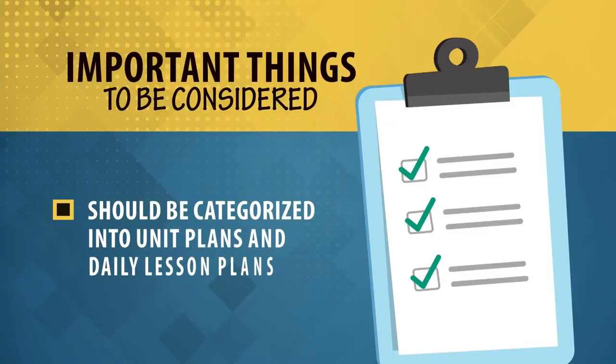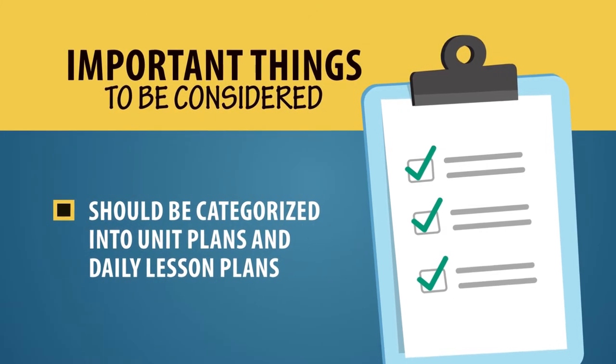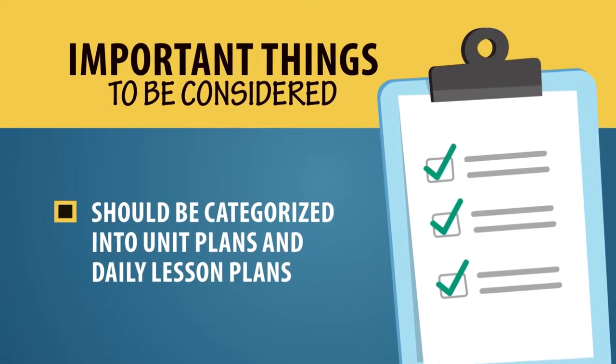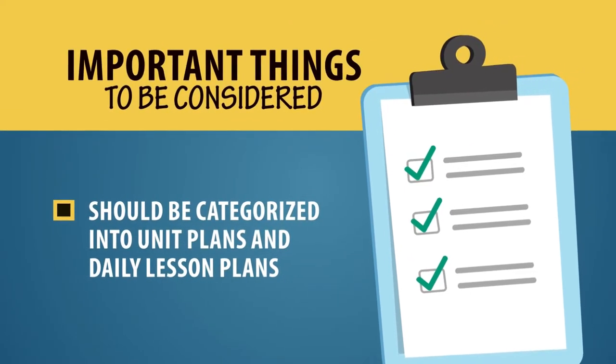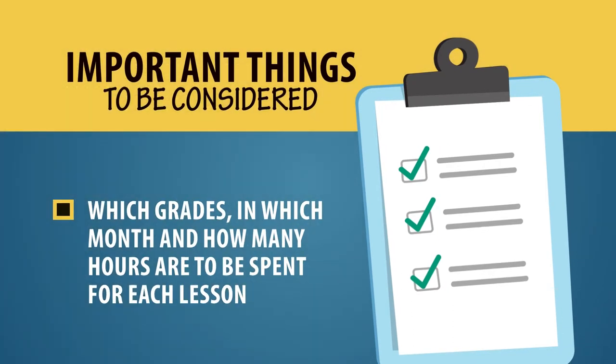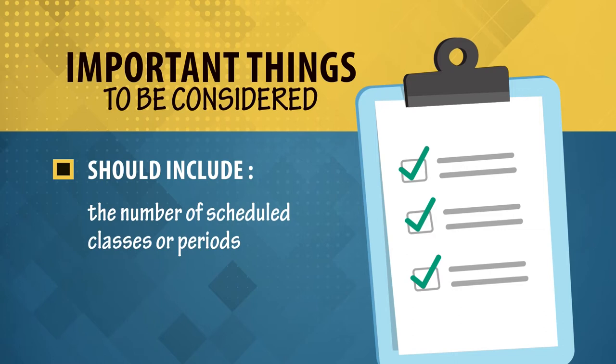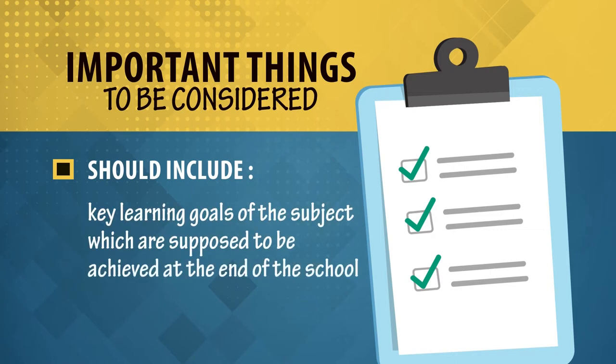Sometimes those who develop the annual plan more meticulously also include the number of lesson plans within the annual plan — for one unit, how many lessons they will deliver. You should think about which grade the annual plan is for. The annual plan for 9th class will be different from 12th class. Your annual plan should include the number of scheduled classes or periods and the key learning goals of the subject and units to be achieved at the end of the session.